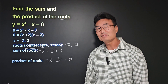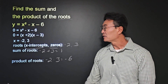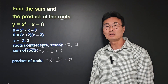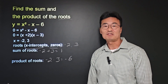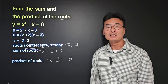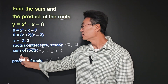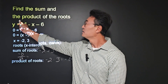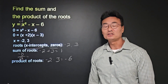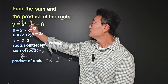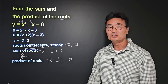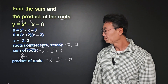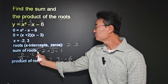However, there is a formula where we can find the sum and the product of the roots without finding the roots themselves. The formula for the sum of the roots is negative b over a, where a is the coefficient of x squared, b is the coefficient of x, and c is the constant.